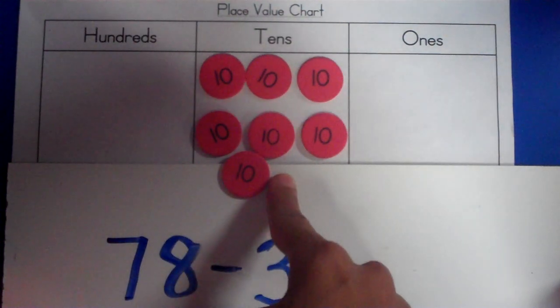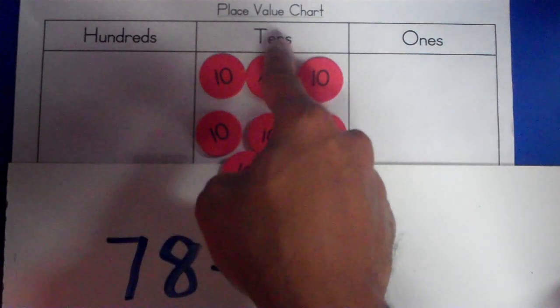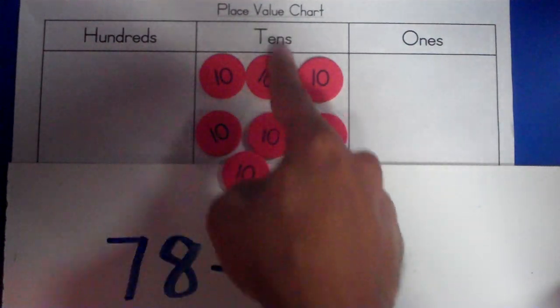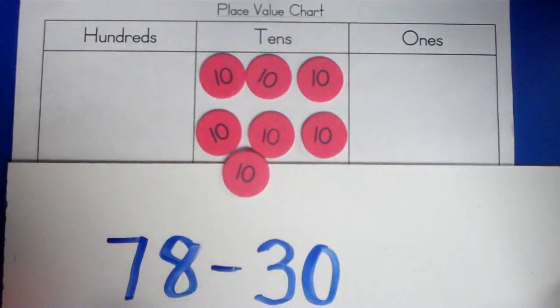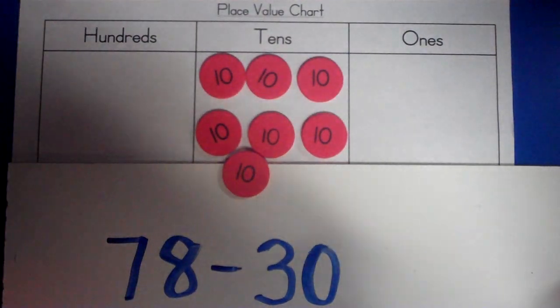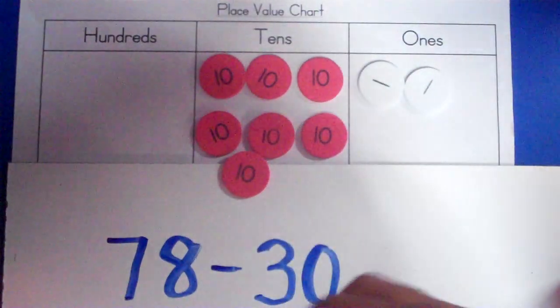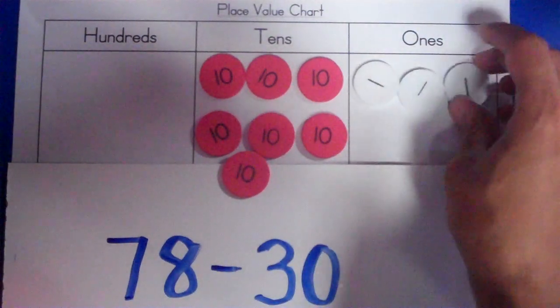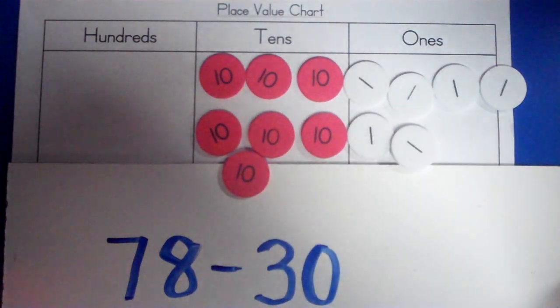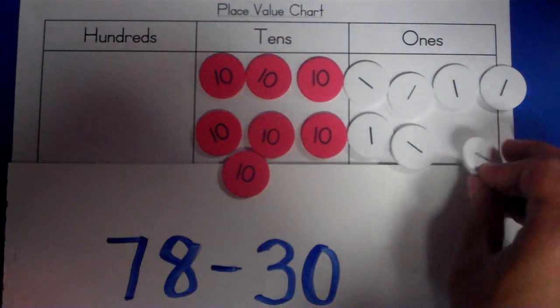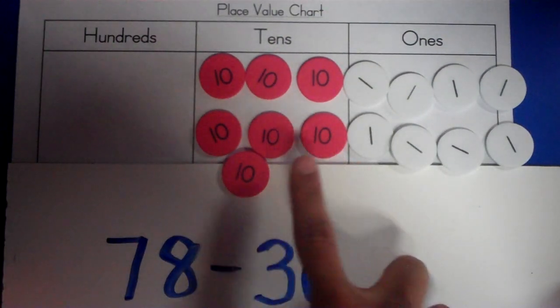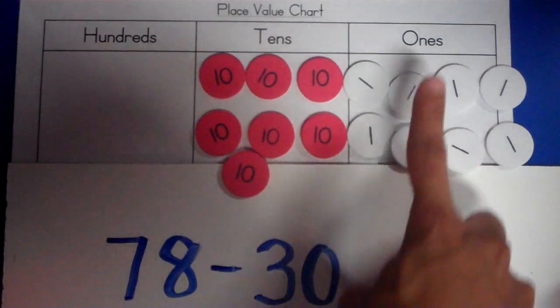Because remember, numbers are adjectives that tell you how many of the denomination you have or tell you how many units you have. This is the noun. Tens are nouns. So, you have seven tens. And now, eight ones. One, two, three, four, five, six, seven, eight.